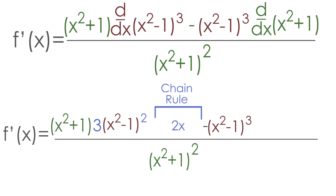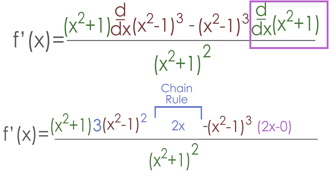Now let's move to the right side of our equation and take the derivative of (x² + 1). The derivative of x² is just 2x, and the derivative of one is just zero, so this is simply equal to 2x.